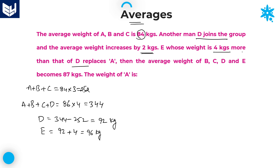E whose weight is 4 kgs more than that of D replaces A. In place of A, E is replaced. Now the persons are B, C, D and E — these are the 4 members at present. After replacing, the average of B, C, D, E is equal to 87.